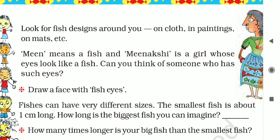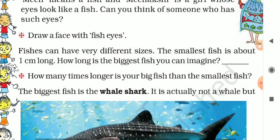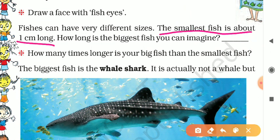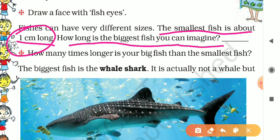Now draw a face with fish eyes — try to do that at home. Next, fishes can have very different sizes. Some fishes are small, some are very big. The smallest fish is about one centimeter long — very tiny. How long is the biggest fish you can imagine? Let's say 80 centimeters — you can also imagine 50 centimeters or more than 100 centimeters.